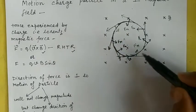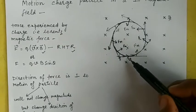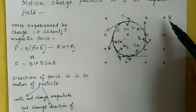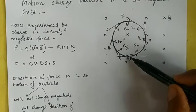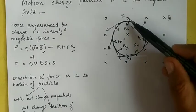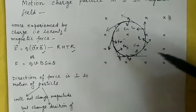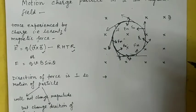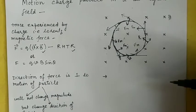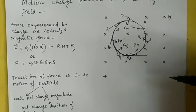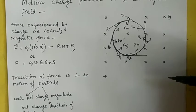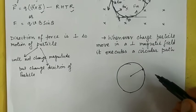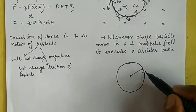From this analysis, we can see that as the charged particle moves in a perpendicular magnetic field, its path looks like a circular path. We conclude that any charged particle moving in a perpendicular magnetic field will execute a circular path.